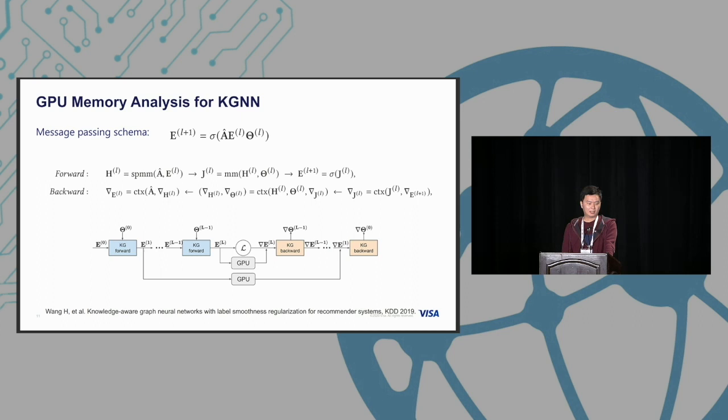If we take a close look at how the computational graph computes this message passing schema, we can see that in the forward pass we need to multiply E with the sparse matrix A to get H^l. We need to decompose these functions into multiple steps. In backpropagation, we need to compute gradients of E and H and gradients. This is how auto-differentiation engines like PyTorch or TensorFlow compute this message passing schema. In the forward pass we need to store these activations E^0, E^1, to E^l into GPU memory in order to compute gradients in backpropagation.